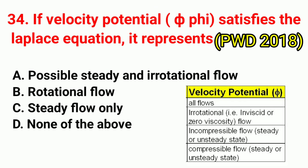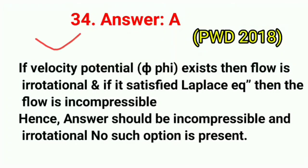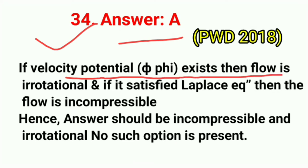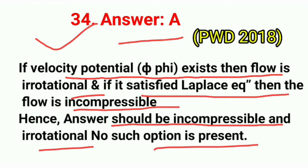Question No. 34. If velocity potential phi satisfies the Laplace equation, it represents? Correct answer is option A: possible steady and irrotational flow. If velocity potential phi exists, the flow is irrotational; if it satisfies the Laplace equation, the flow is incompressible. Hence the answer should be incompressible and irrotational; since no such option is present, correct answer is option A.